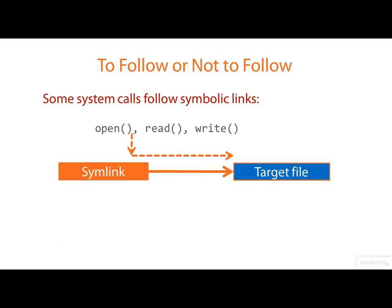Translating that to the command line, for example, if you ran less to examine the contents of a symbolic link, you'd actually see the contents of the target file. Some system calls don't follow symbolic links — a classic example is unlink. If you unlink a symbolic link, it's the symlink that's removed, not the target file.